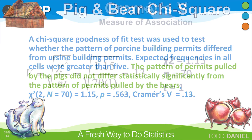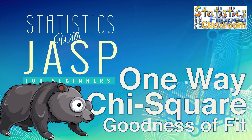Here is a sample APA-style write-up for the one-way chi-square goodness-of-fit test. We used chi-square to compare the pattern of porcine and ursine building permits. We concluded: the pattern of permits pulled by the pigs did not differ statistically significantly from the pattern of permits pulled by the bears. The bears know that building with brick and mortar is smart, and the pigs are at least as smart as the average bear. And that is how we calculate a one-way chi-square goodness-of-fit test in JASP.